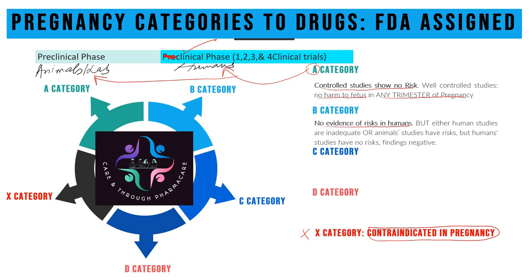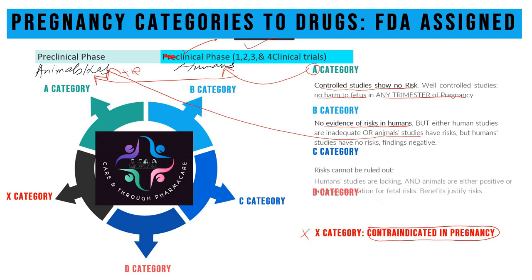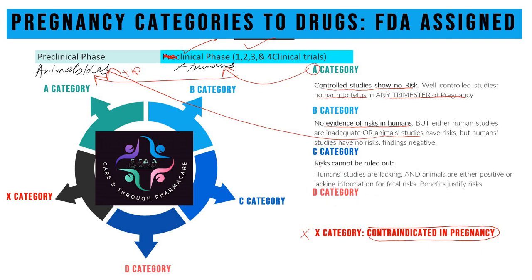For Category B, laboratory animal studies may be positive for risk, or human studies are still lacking. As far as Category C is concerned, risk cannot be ruled out — it means there are documented risks, but these documented risks still cannot be ruled out, meaning you have to assess the benefits versus the risk.